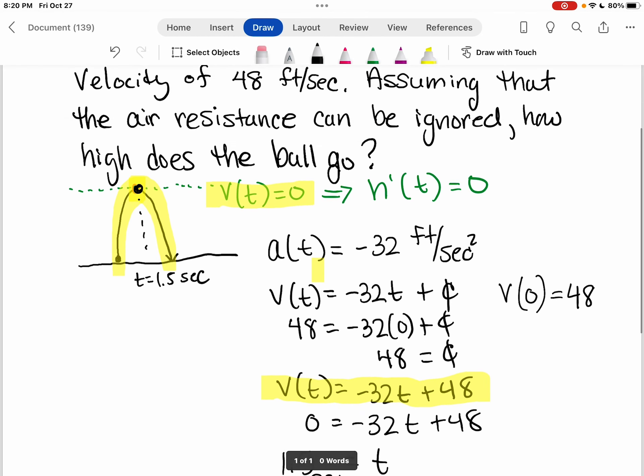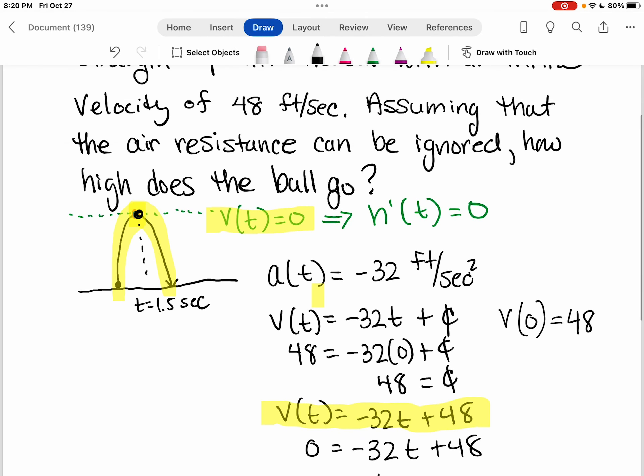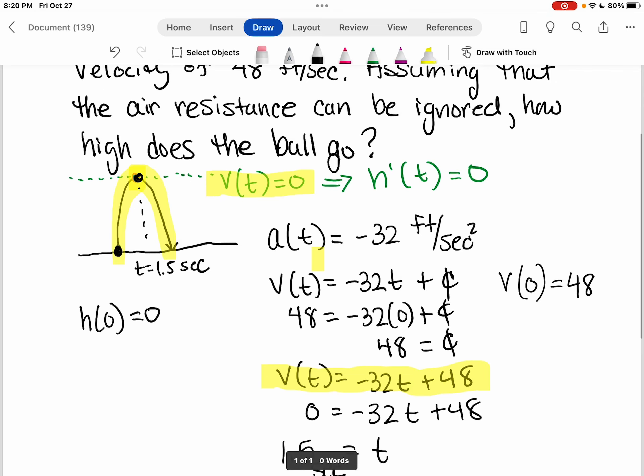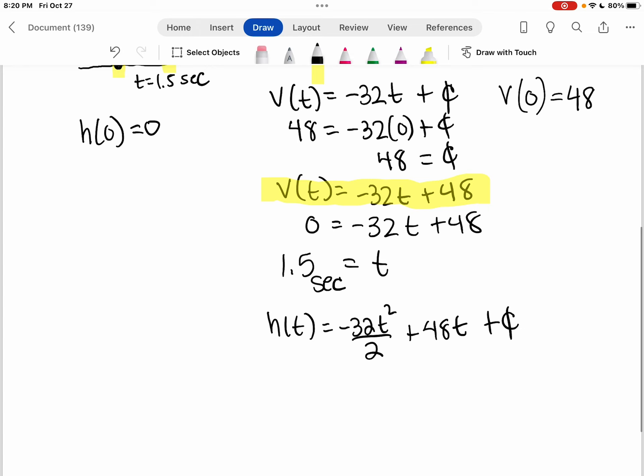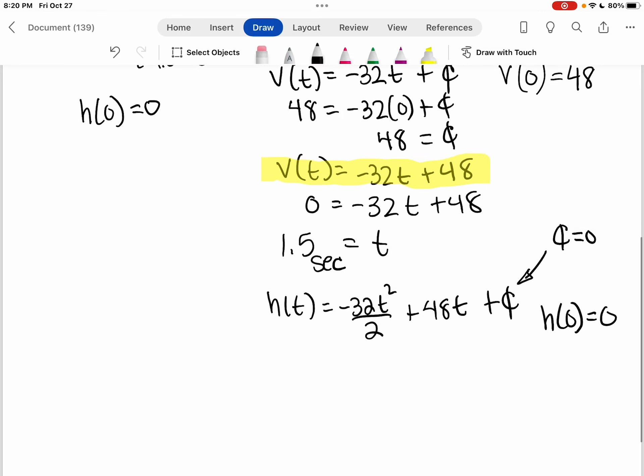Now they don't tell us directly what the initial height is in the problem, but since we're starting at ground level and we shoot the ball up, we can say that the initial value for the height is zero, which means this constant is going to be zero. Because if I plug in the height is zero and I want to get out zero, then that constant needs to be zero.